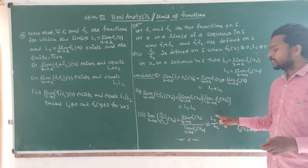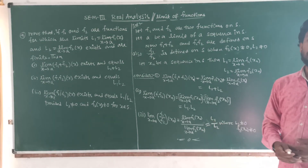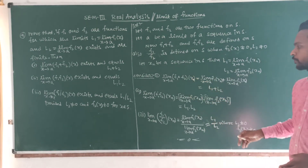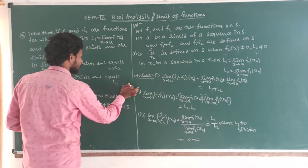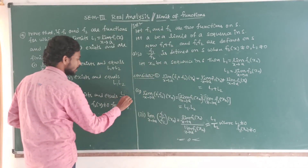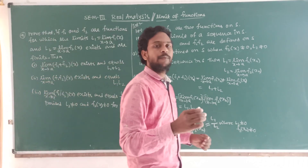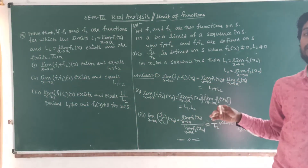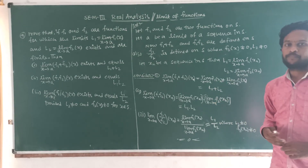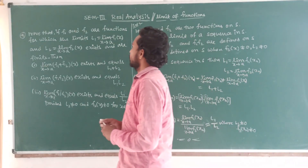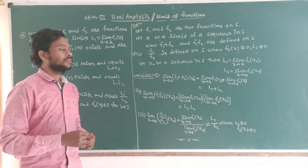So in place of the numerator we can substitute L1, and the denominator becomes L2. This is the third one. This is the complete proof. We have one or two problems to do after this, and then this chapter will be finished. Thank you very much.